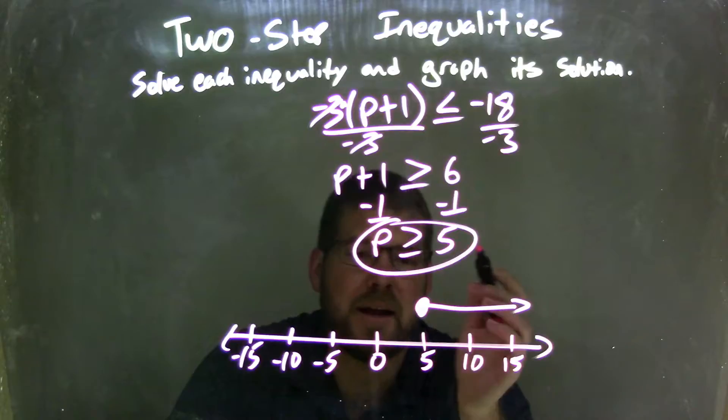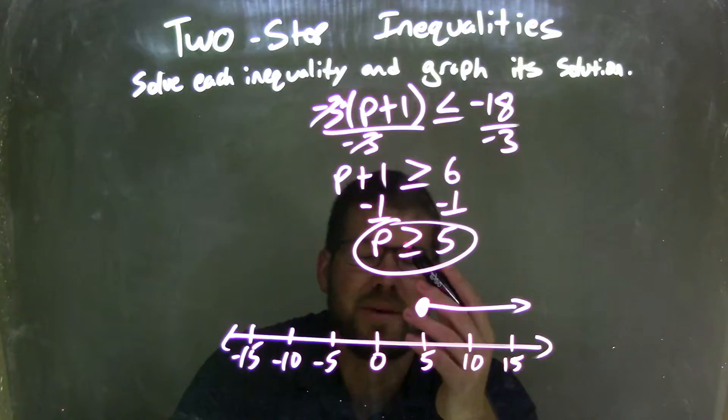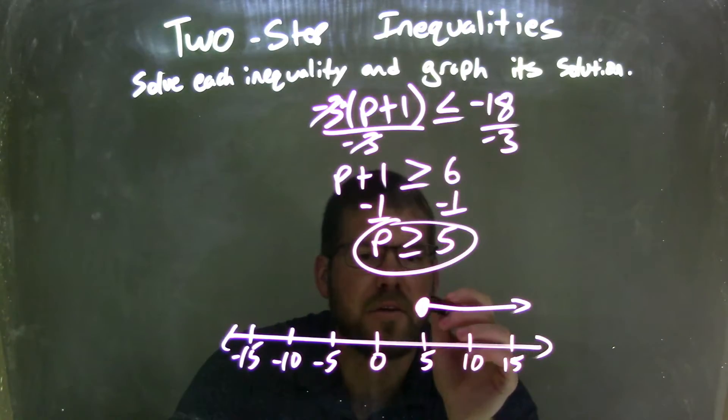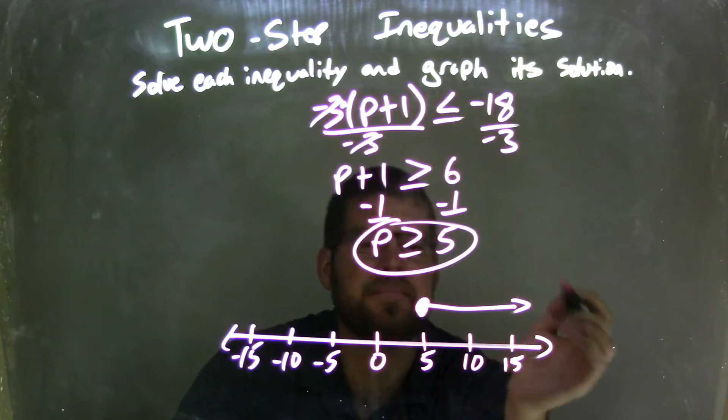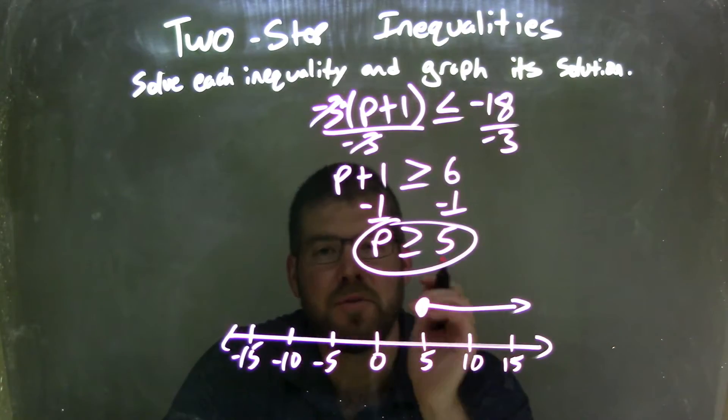Now that I had p isolated, I needed to graph it. Closed circle because it's equal to, and I put my arrow to the right because p was greater than 5. So we have the equal to sign, closed circle, greater than, arrow to the right. Our graph now matches our final answer of p is greater than or equal to 5.